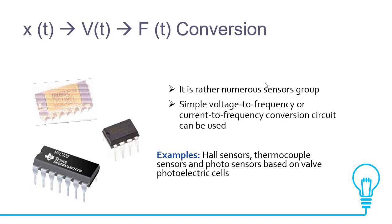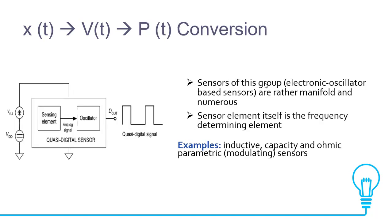For X(t)→V(t)→F(t) conversion, a simple voltage-to-frequency or current-to-frequency conversion circuit can be used. Examples include hall sensors, thermocouple sensors, and photoelectric sensors. For the X(t)→V(t)→V(t) conversion, electronic oscillator-based sensors are numerous. The sensor element itself is the frequency-determining element. Examples include inductive, capacitive, and ohmic parametric sensors. The diagram is self-explanatory for this quasi-digital signal waveform.